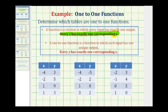So once we know a relation is a function, we can then test to see if it's a one-to-one function. A one-to-one function is a function in which each input has one unique output. An easier way to think of this is: a function is one-to-one if every y has exactly one corresponding x.